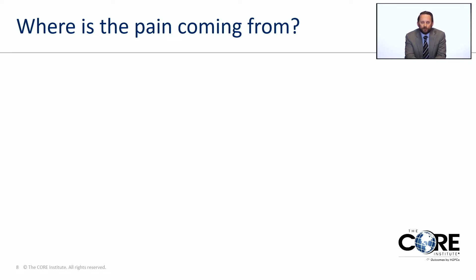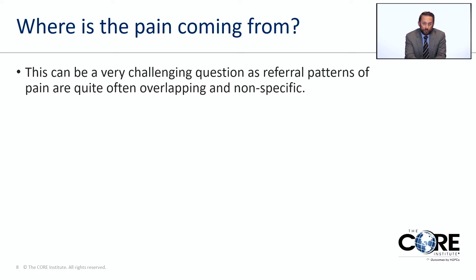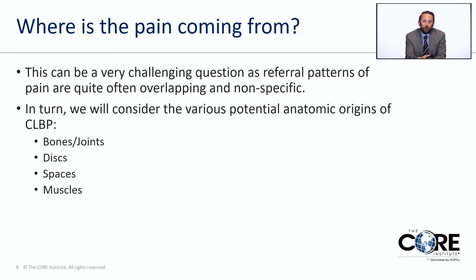Where does the pain come from? This can be a really challenging question because referral patterns of pain often overlap and are nonspecific — meaning a variety of structures in your low back can cause pain in similar areas. The pain medicine specialist's goal is to evaluate you and figure out which structure is responsible. I like to keep things simple, so I break it into four basic categories: bones and joints, discs, spaces, and muscles.